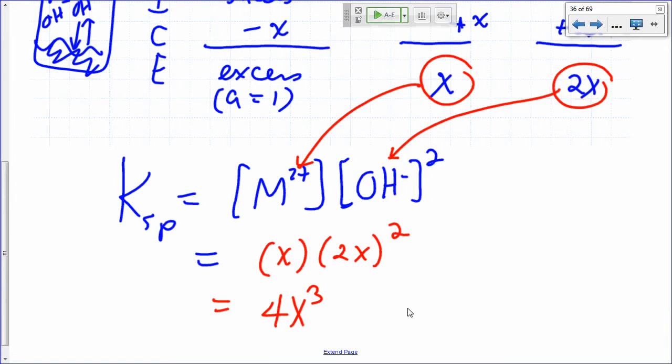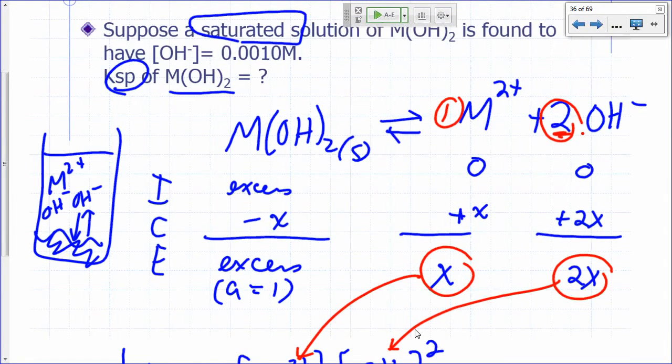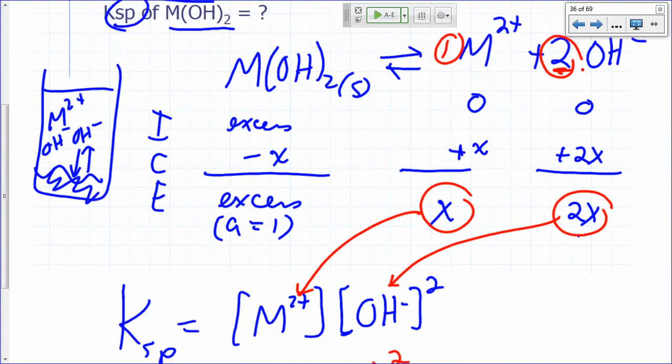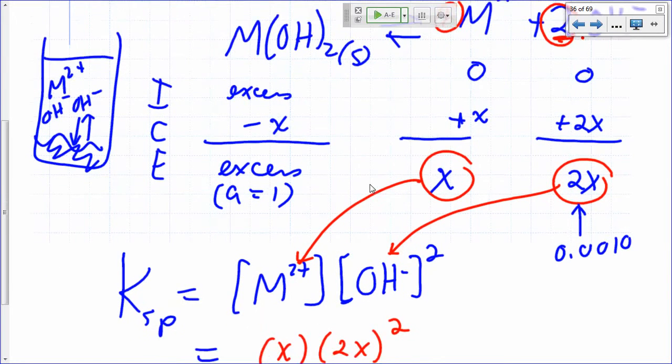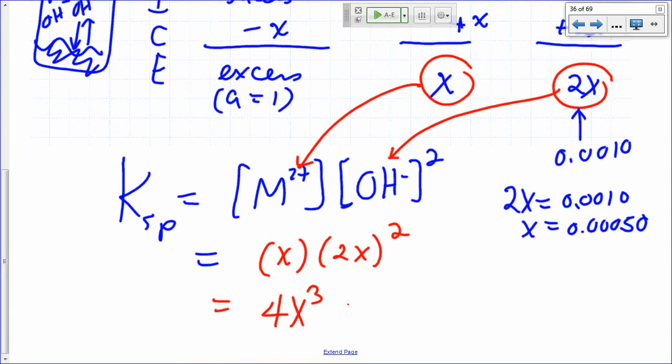Do I know X though? What information do I have here? You're told that hydroxide at equilibrium is 0.0010. So what's hydroxide? This is your hydroxide, right? This is 0.0010. So what is X? 2X divided by 2. So if 2X is 0.0010, X would be 0.00050, right?